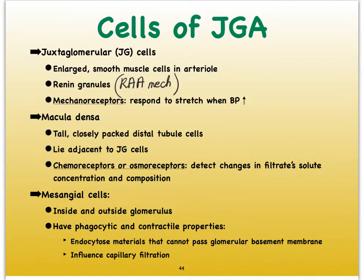The second cell type is called the macula densa cells — 'dense' basically meaning a spot that looks dense. These are found in the wall of the distal convoluted tubule that touches the arteriole area, particularly the afferent arteriole. You can pick out that area because the cells are really densely packed, almost like closely packed simple columnar epithelial cells. These cells function as chemoreceptors and osmoreceptors of the filtrate present in the distal convoluted tubule, constantly sensing what is present there and what the concentration is, then setting off the appropriate response.